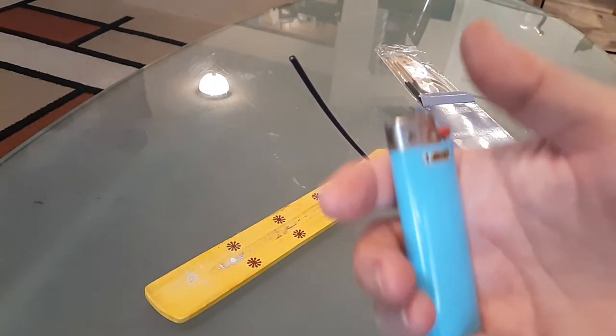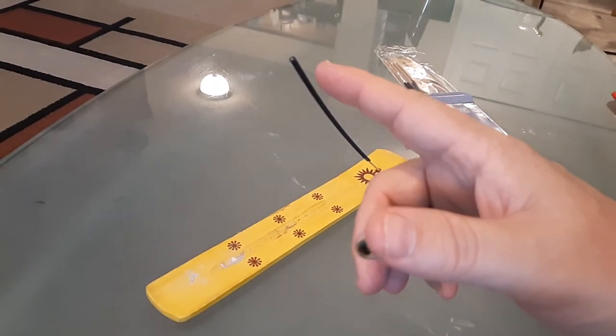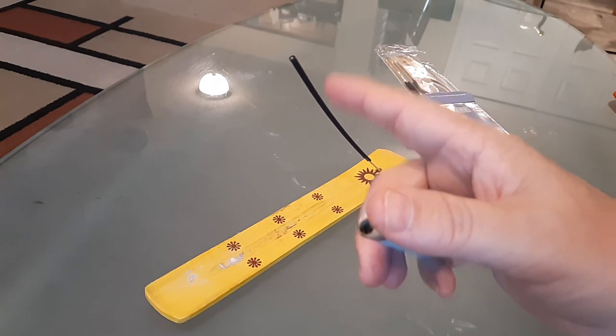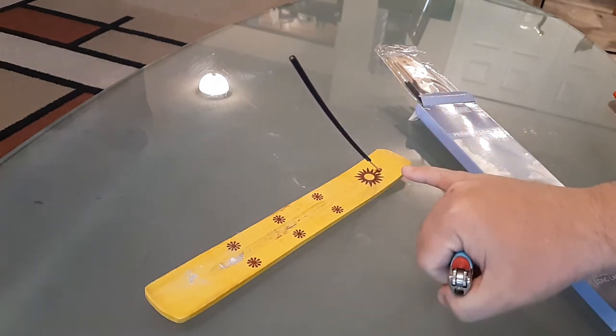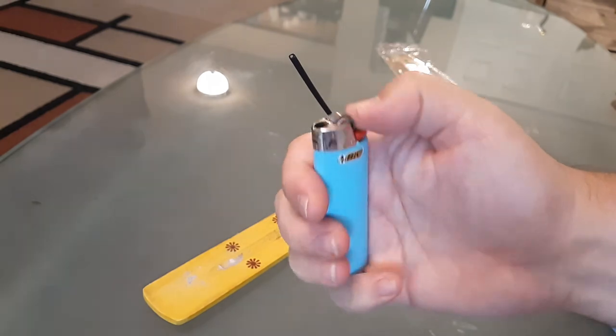What we're going to do is hold the lighter on the very tip of the incense, the black portion of it, not the actual stick. And let's go ahead. It's almost like lighting a sparkler.